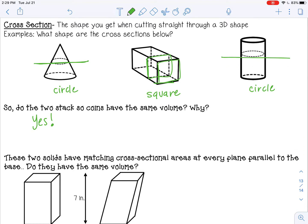And the reason is because, one, they have the same height, and they have the same cross-sectional area, meaning every quarter has the same area.